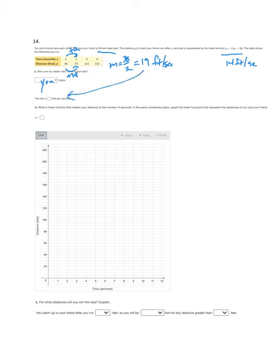Write a linear function that relates your distance to the number of seconds. If the slope is 19 feet per second and we know that you did not get a head start, we just have y equals 19x. We're going to graph on the same coordinate plane the functions for you and your friend.